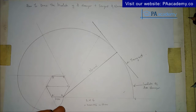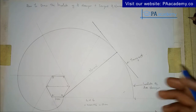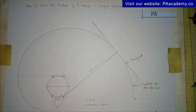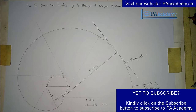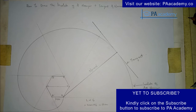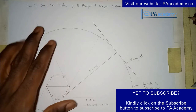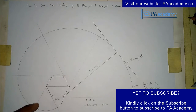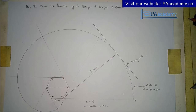This is how you draw the involute of the hexagon and construct the normal and tangent. If you also want to know how to draw the involute of a square, triangle, circle, or pentagon, I'll leave links to those videos in the description. If you found value in this video please give it a thumbs up, subscribe to PA Academy — it's absolutely free. Check out our playlist on technical drawing for more helpful videos. Thank you very much for watching and I'll see you in another video.